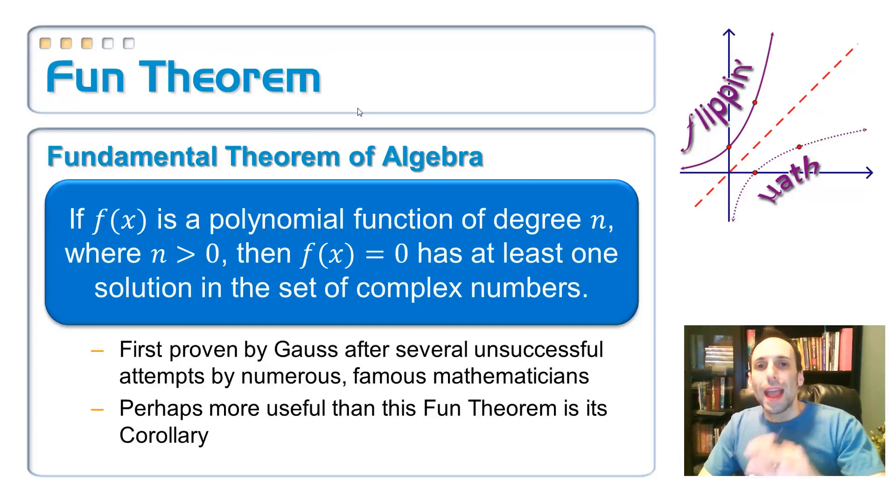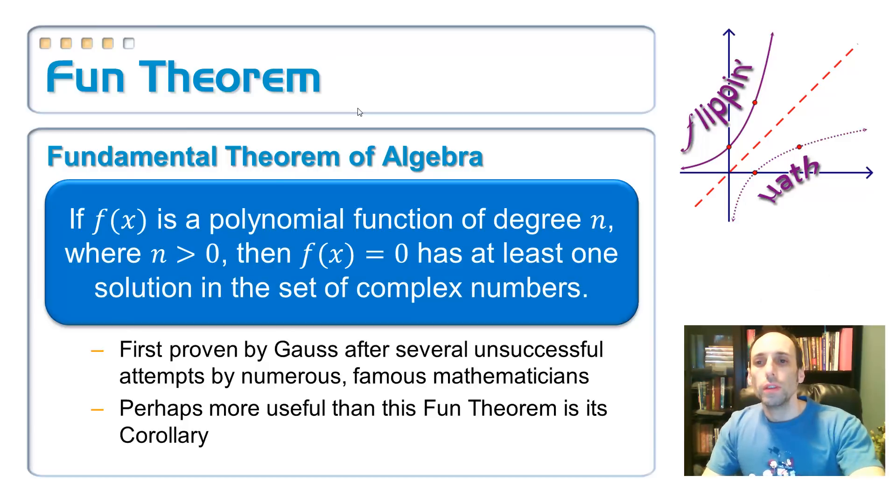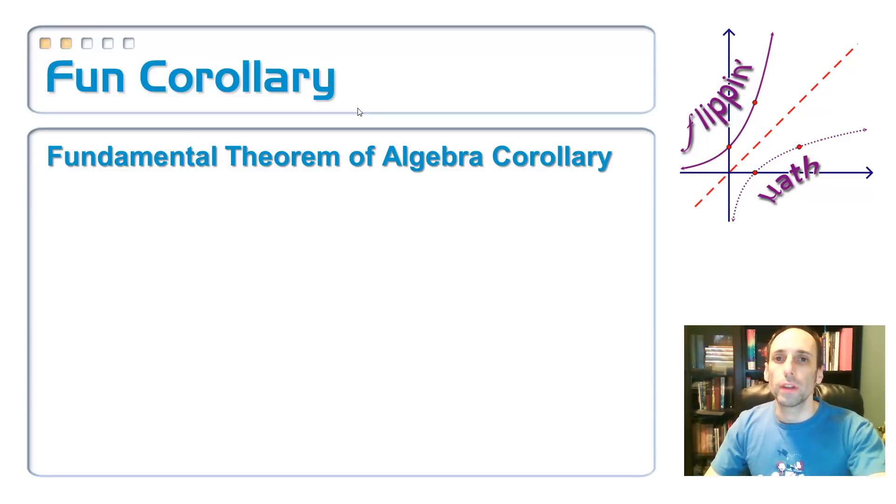First proven by Gauss. After a whole bunch of people tried to prove it, but they couldn't prove it. So, here's the first one to come around. It's like, I'm a little bit smarter than you guys. Here's how you prove this. The only thing is, is that it doesn't seem very useful, because all you're saying is that you have at least one solution. This is what's called an existence theorem. All it tells you is that something exists. It doesn't tell you how to get it. It doesn't even tell you how many there are, just at least one.